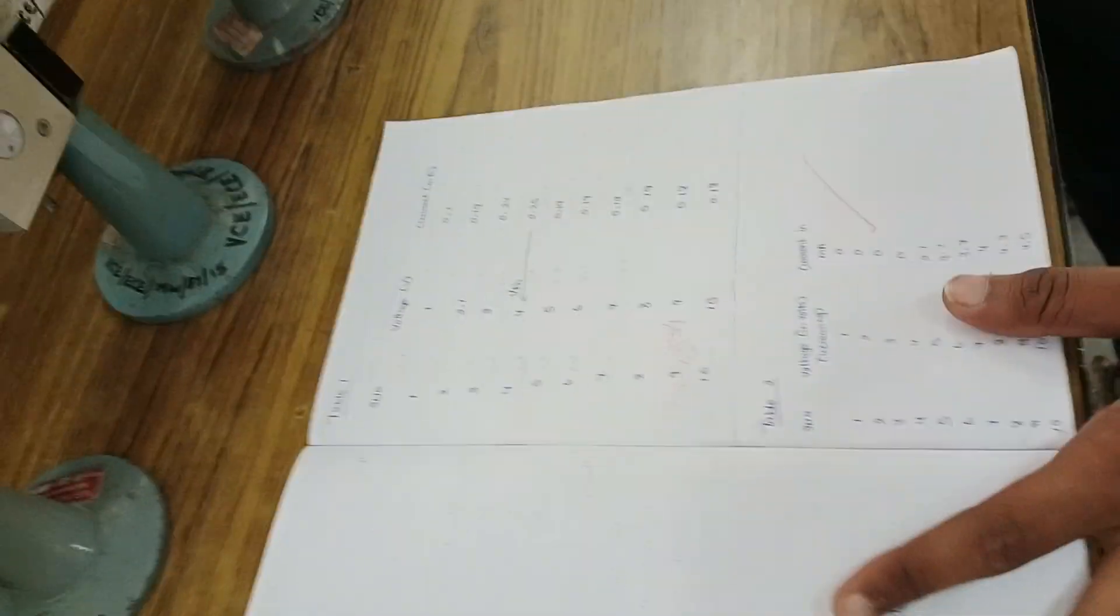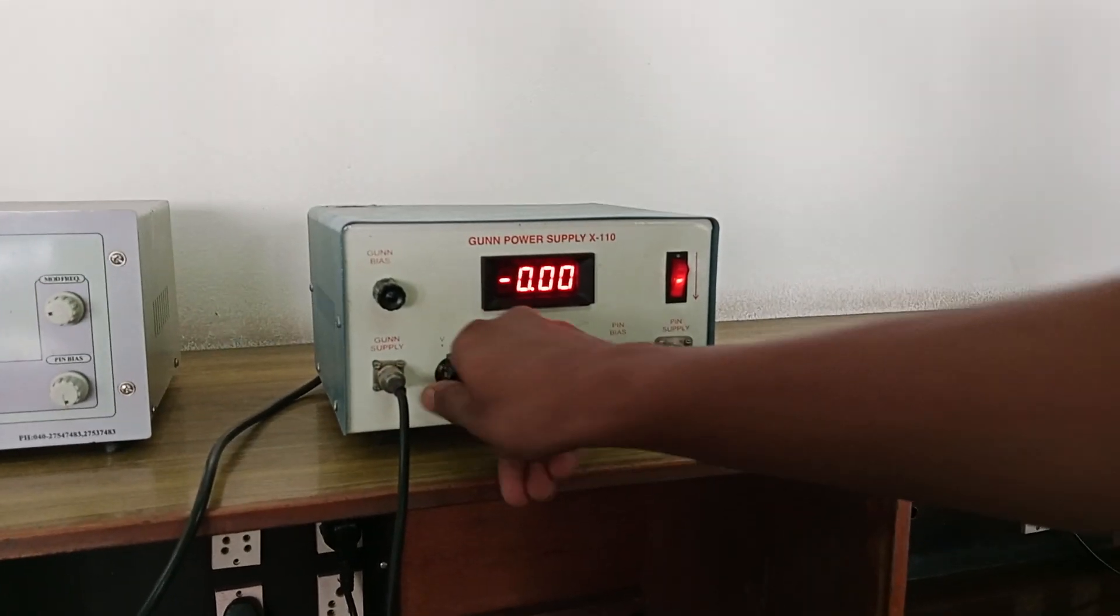So first we have three tables here. For the first table we have voltage, voltage, this is bias current and this is output current.